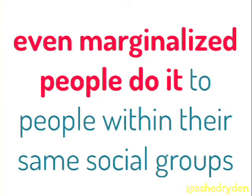Marginalization happens within our group too — even female scientists were doing this to the fictional Jennifer. We're all raised in a society that says some people are less competent, less educated, lazier, or not biologically predisposed to being logical. I'm sure everyone has heard these kinds of things. All of us have this bias in us, and it's that bias we have to educate ourselves about so we can start combating it.